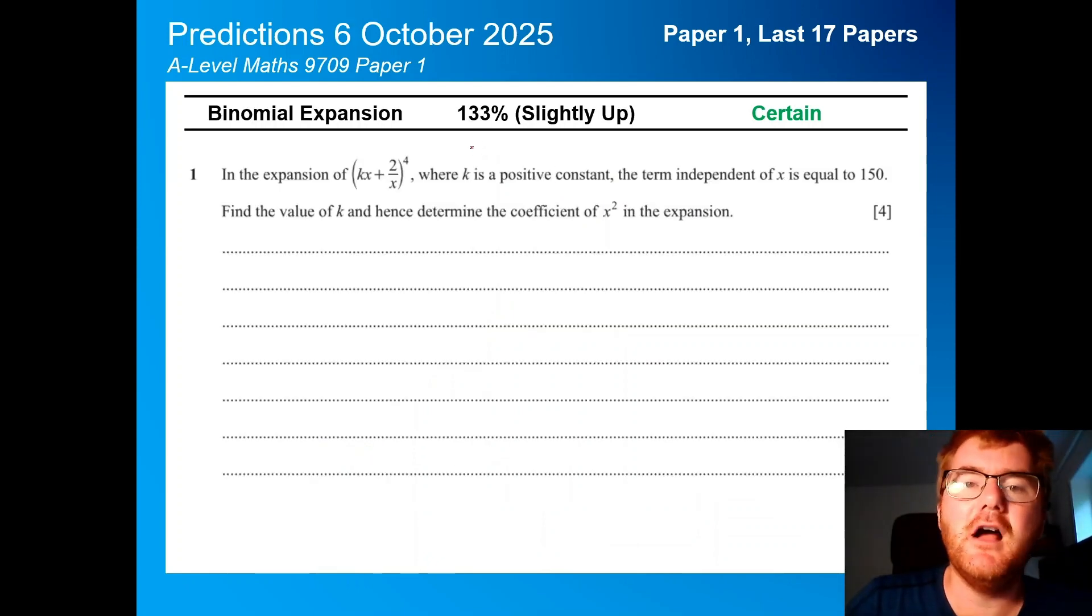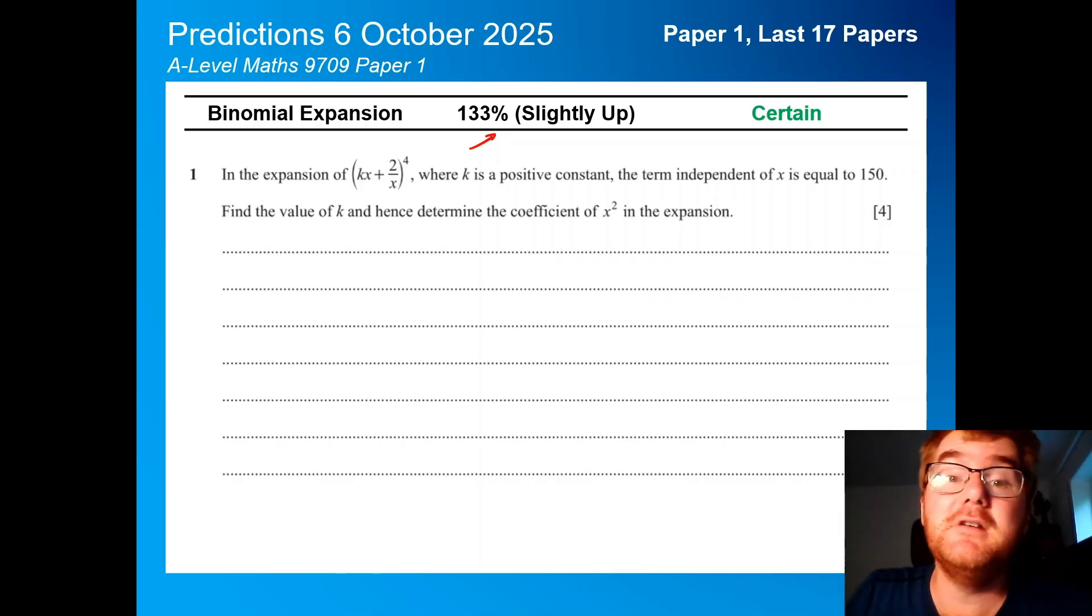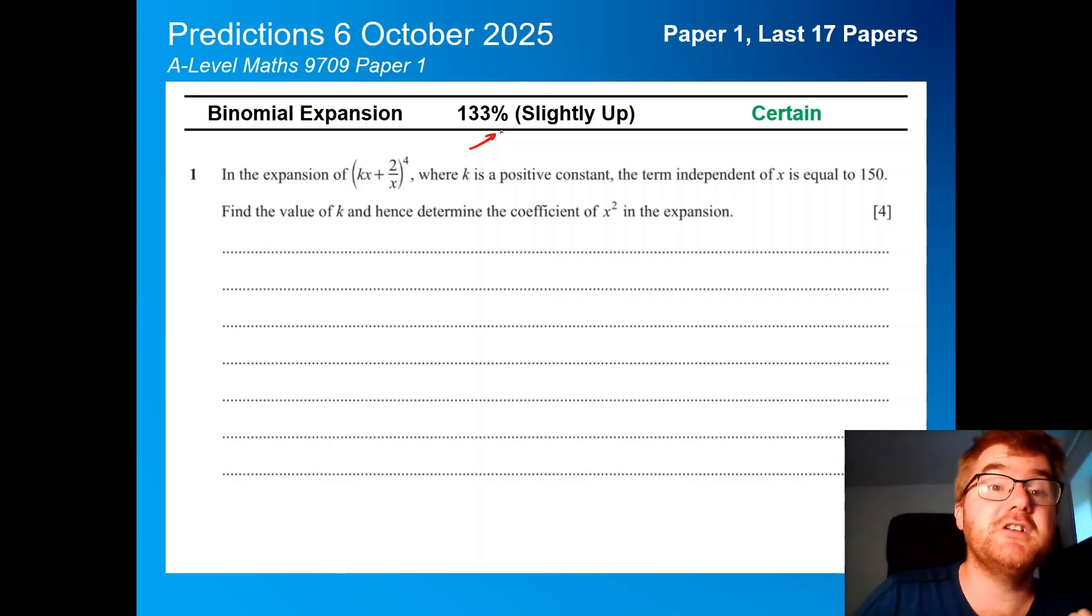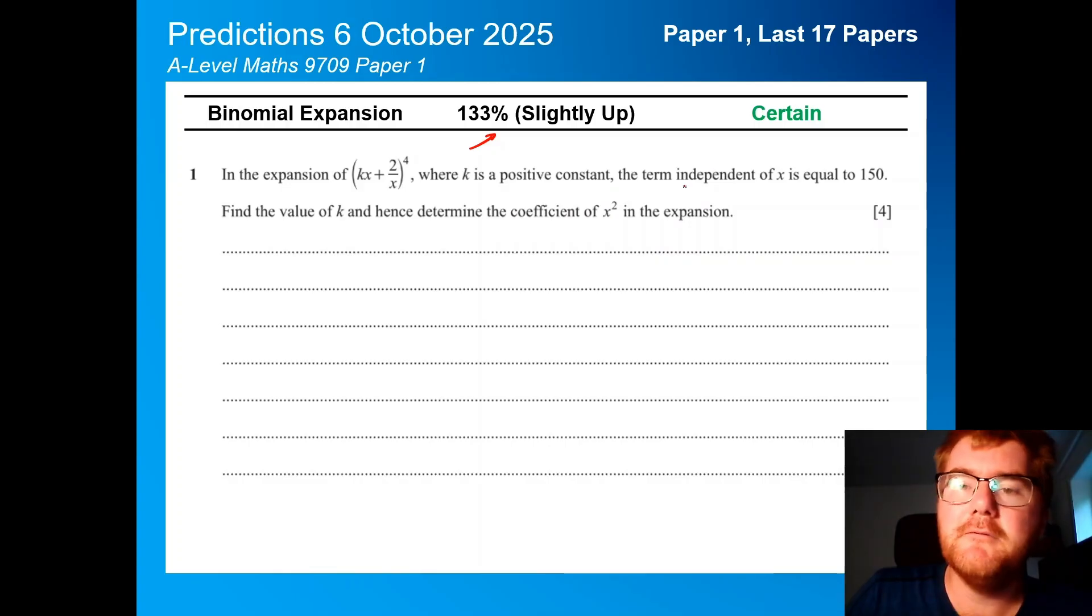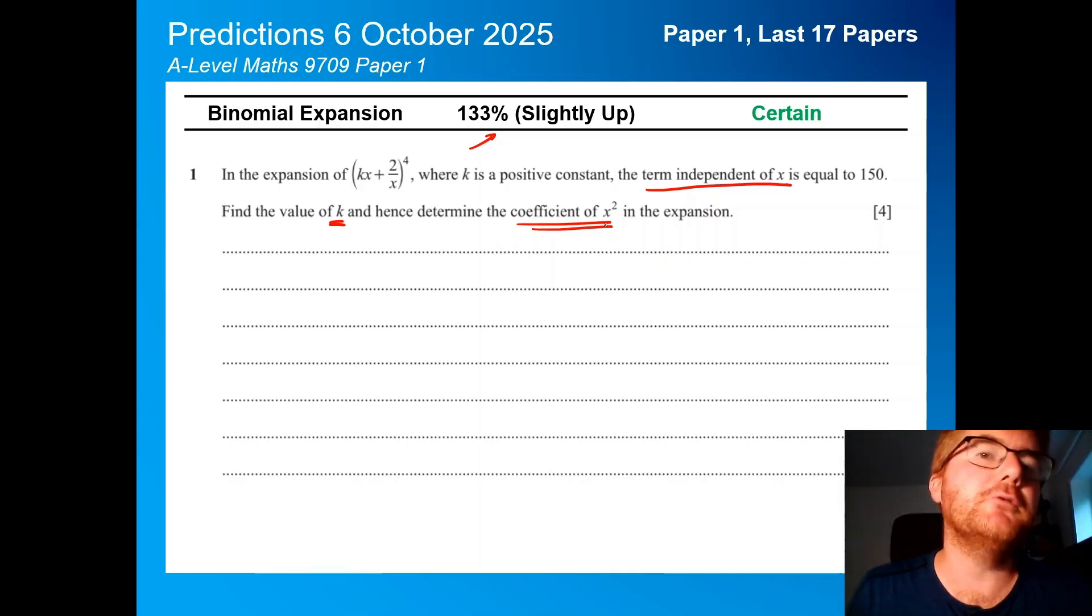On to binomial expansion, slightly up here at 133%, no surprises that it comes up pretty much every year. This is a typical question. They're going to give you some expression to the power of 4, power of 5, power of 6, and then using, for example, the term independent of x, so just the numbers equal to 150, and by knowing that fact, you can actually work out k and then the coefficient of x squared in the expansion. This is a very typical star question.